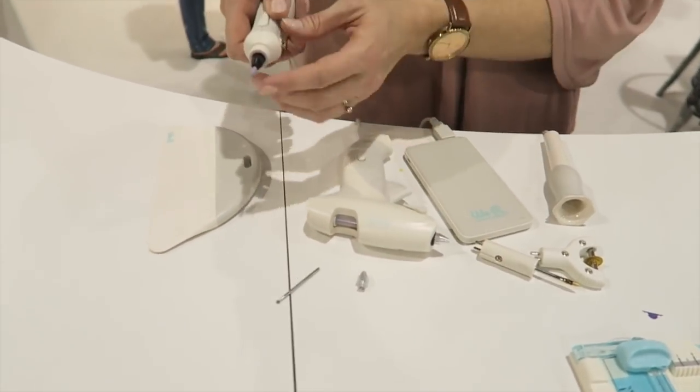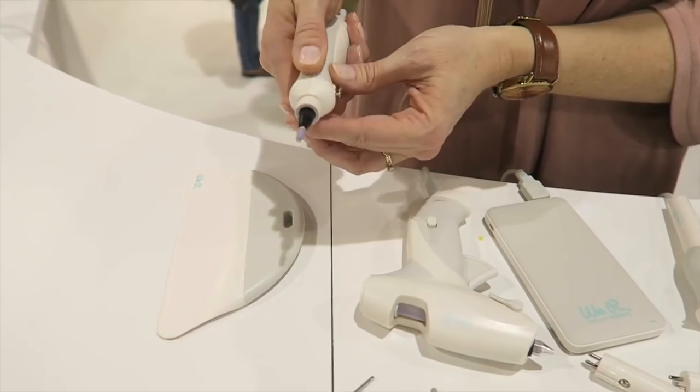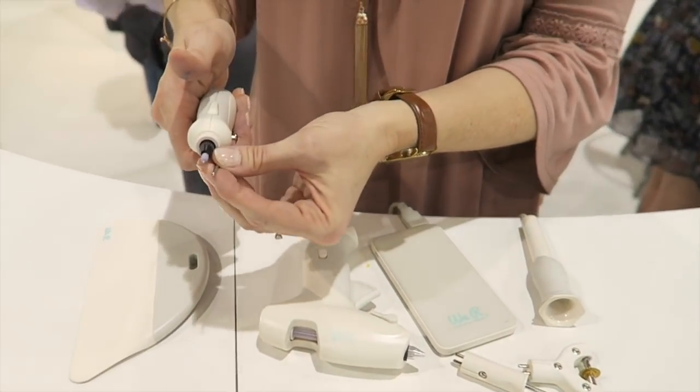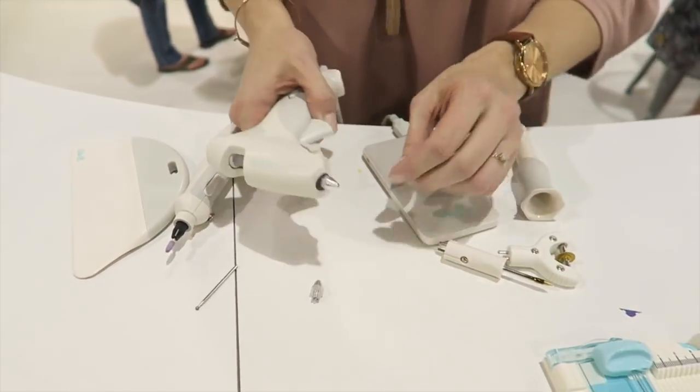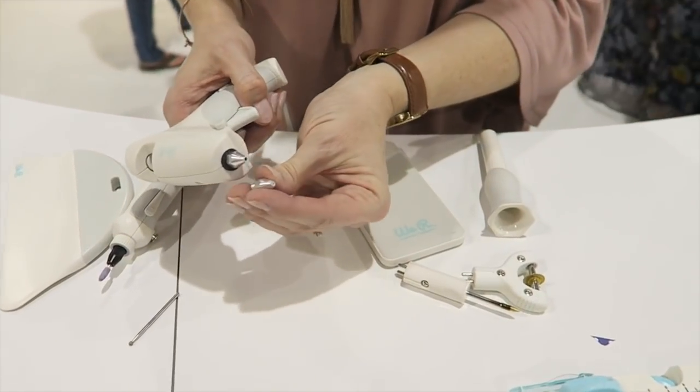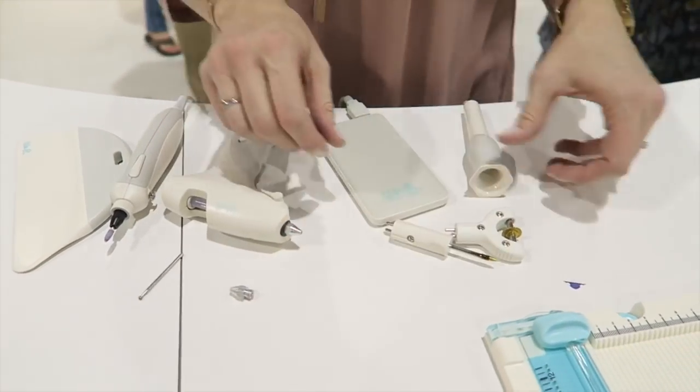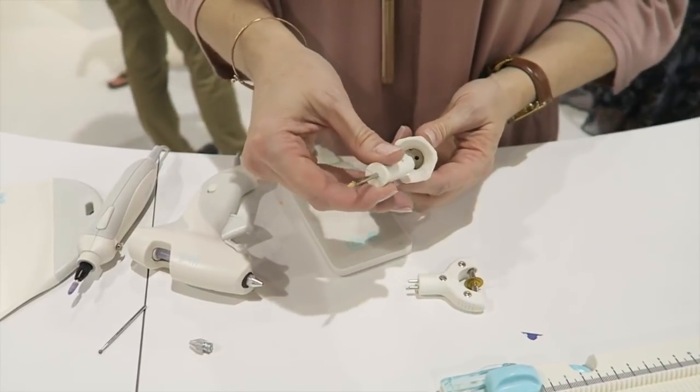And this tool is for sanding. And you can also change the tip and do etching as well. This is a glue gun that has a fine tip and a wide tip.